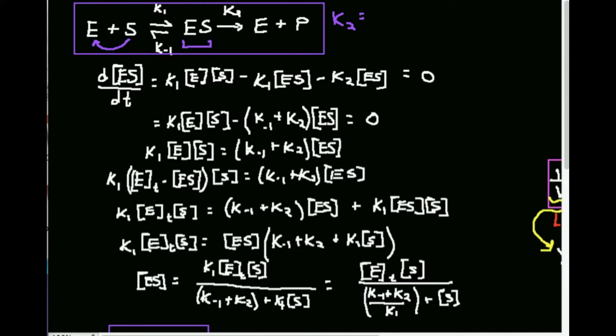If you ever see K2 in the context of an enzyme, it is also called Kcat, where 'cat' stands for catalysis. So K2 equals Kcat. This is the Michaelis-Menten model for all of enzyme kinetics.